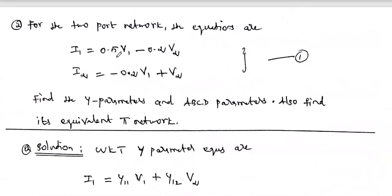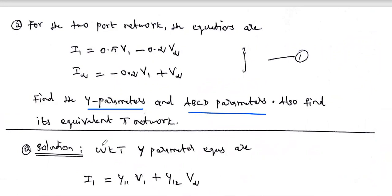Now we are going to solve a problem related to this. For a two-port network, the equations are given. Find the Y-parameter and ABCD parameter, and also find its equivalent pi network. Looking at the given equations for I1 and I2 in terms of V1 and V2, these two equations are the Y-parameter equations. In the first equation, the coefficient of V1 is Y11 and the coefficient of V2 is Y12.